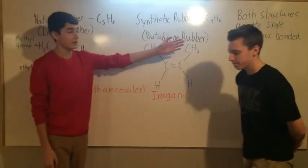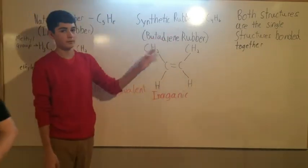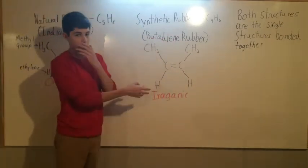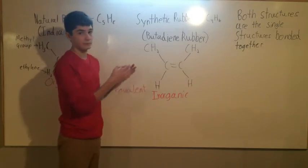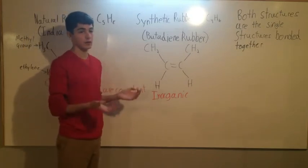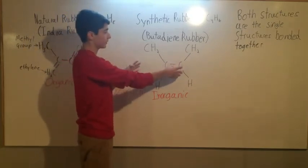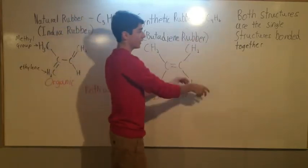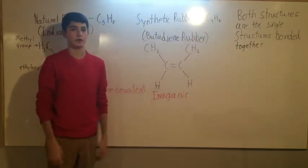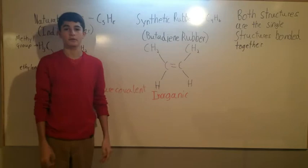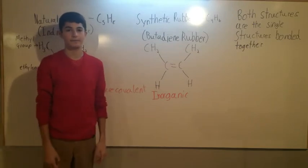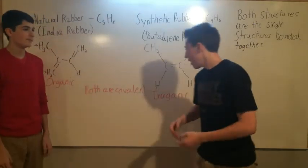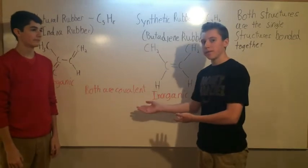Over here, I have a small sentence about the structure — a little bit confusing, let me explain. Synthetic rubber — I'm going to use this as an example. In, let's say, a car tire, this structure will be bonded together to itself multiple times over to create a superstructure, which will end up being the rubber in the tire.